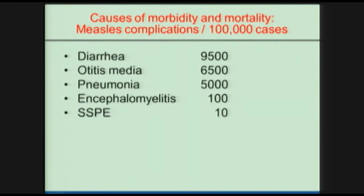Measles is a cause of death, which is not the case for most childhood rash diseases. It's a much more severe rash disease than many others, such as rubella. The causes of death include diarrhea, otitis media, and pneumonia, which are primarily complications due to other infectious diseases. People with measles are more susceptible to other diseases that then require antibiotic treatment. Deaths are most often due to bacterial pneumonias.